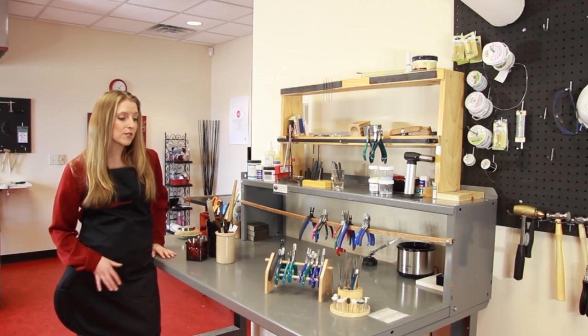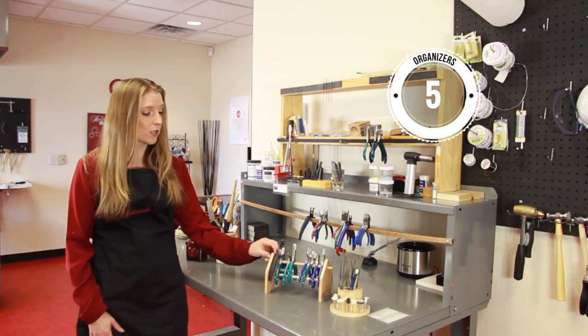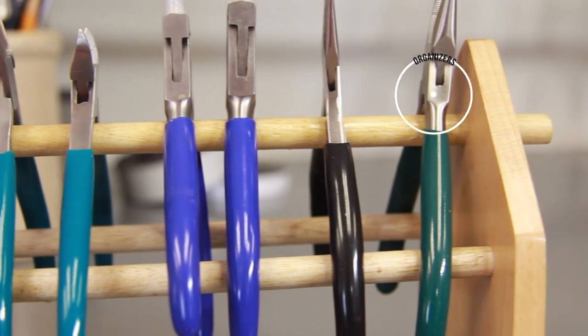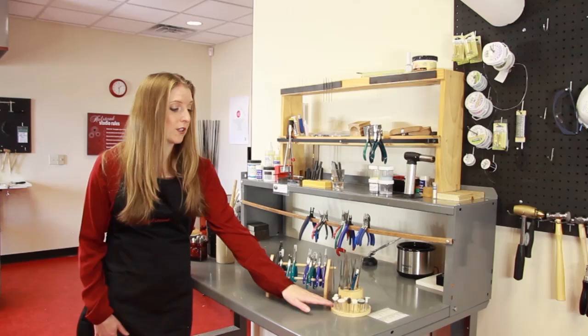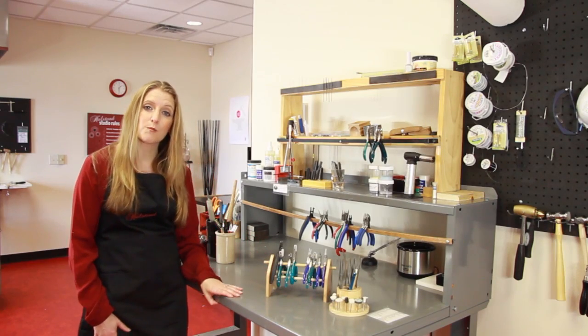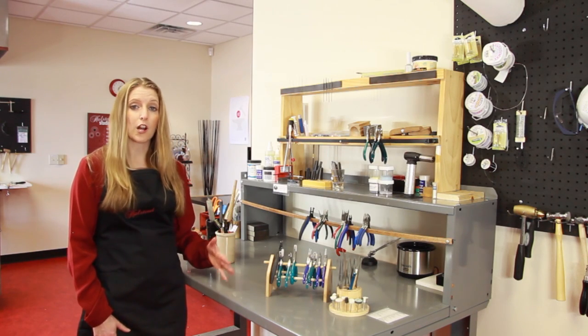And number five, there are also some organizers you can purchase for not a lot of money. These wooden organizers cost about seven or eight dollars and they're a great way to keep your pliers, your needle files, your flex shaft attachments and other small tools organized and ready to grab.